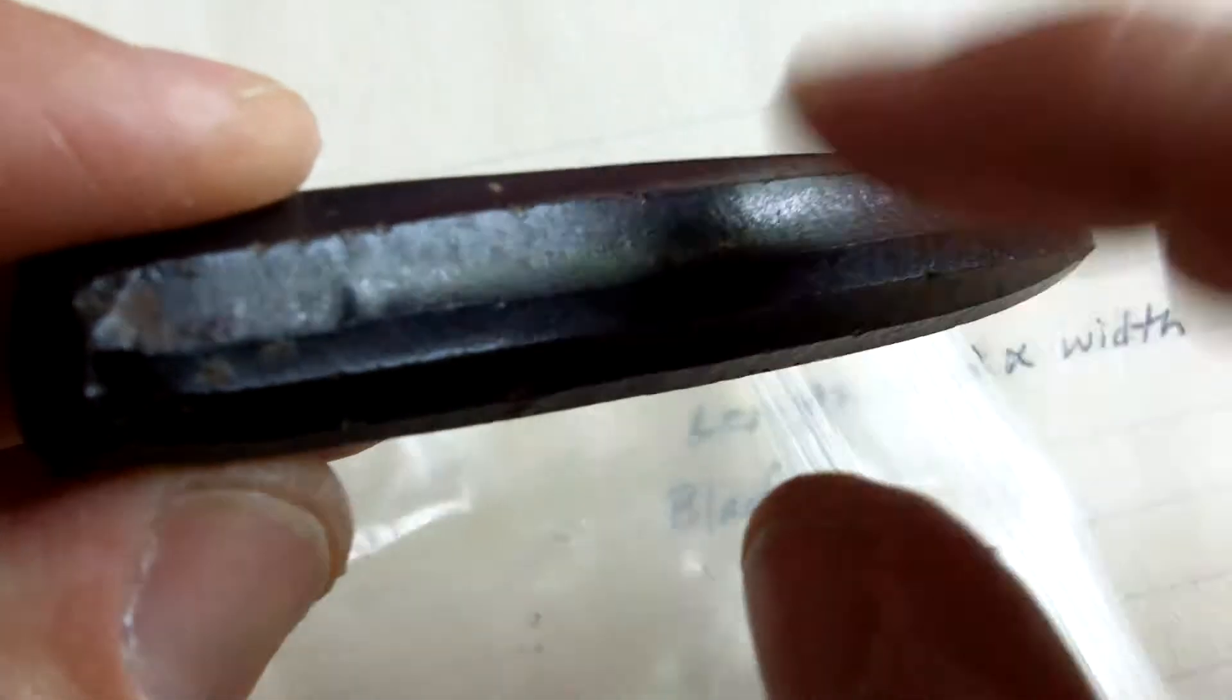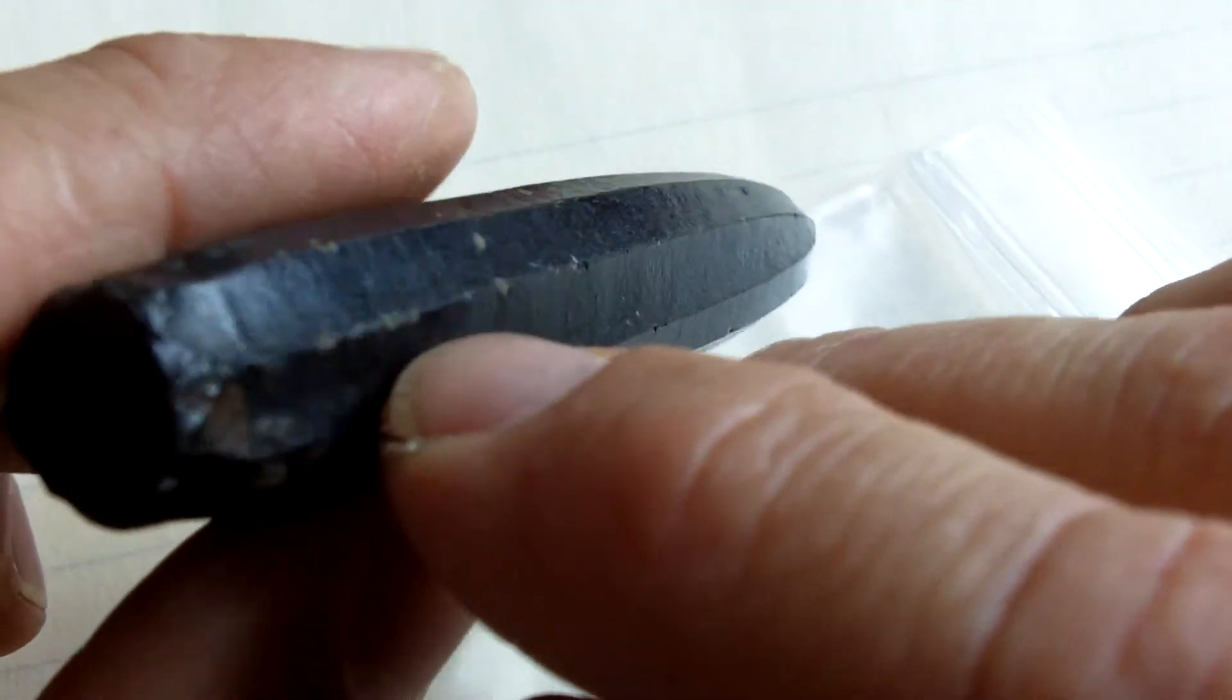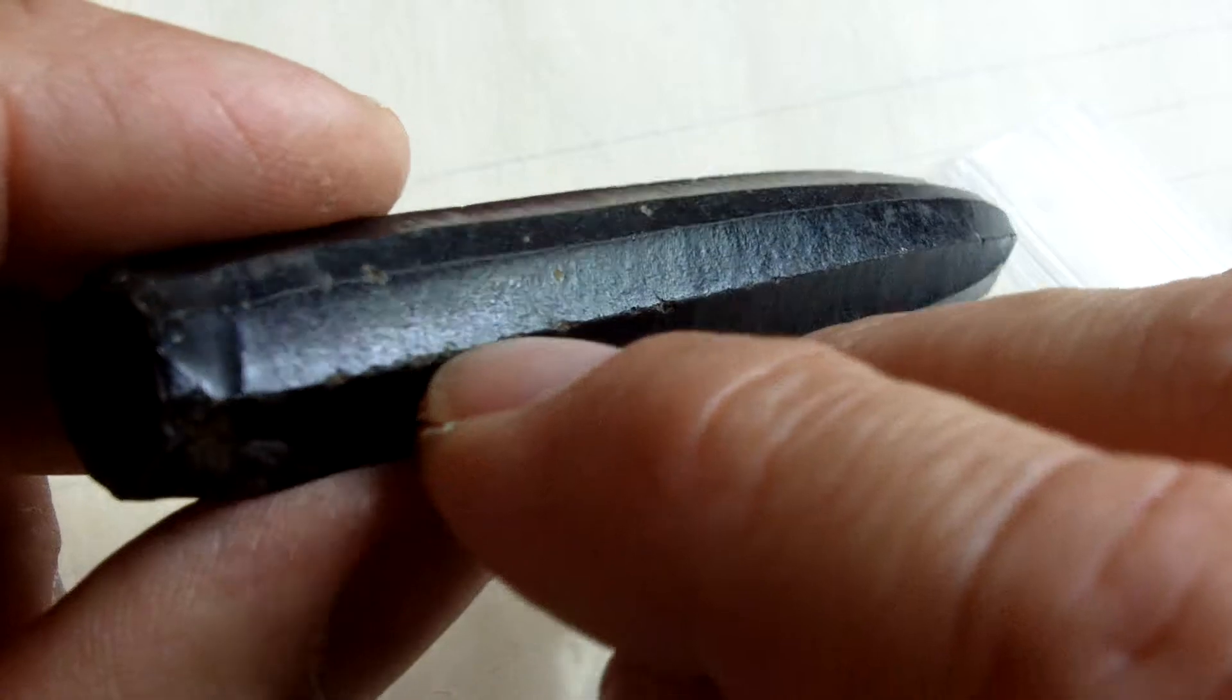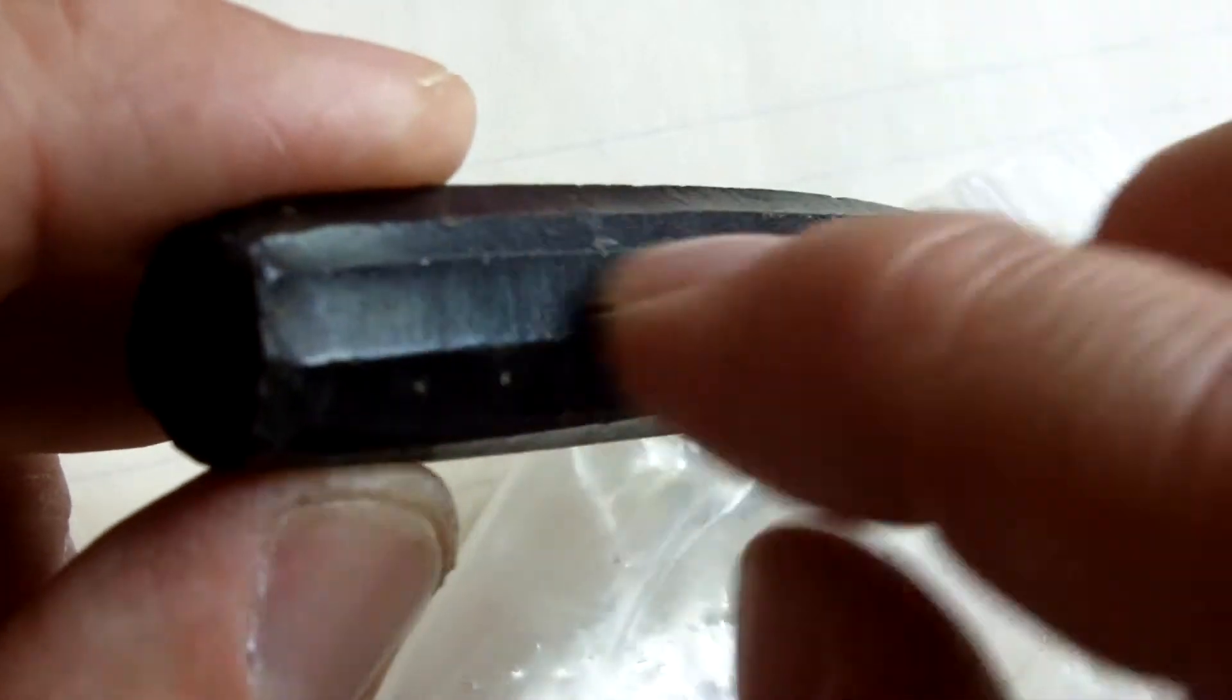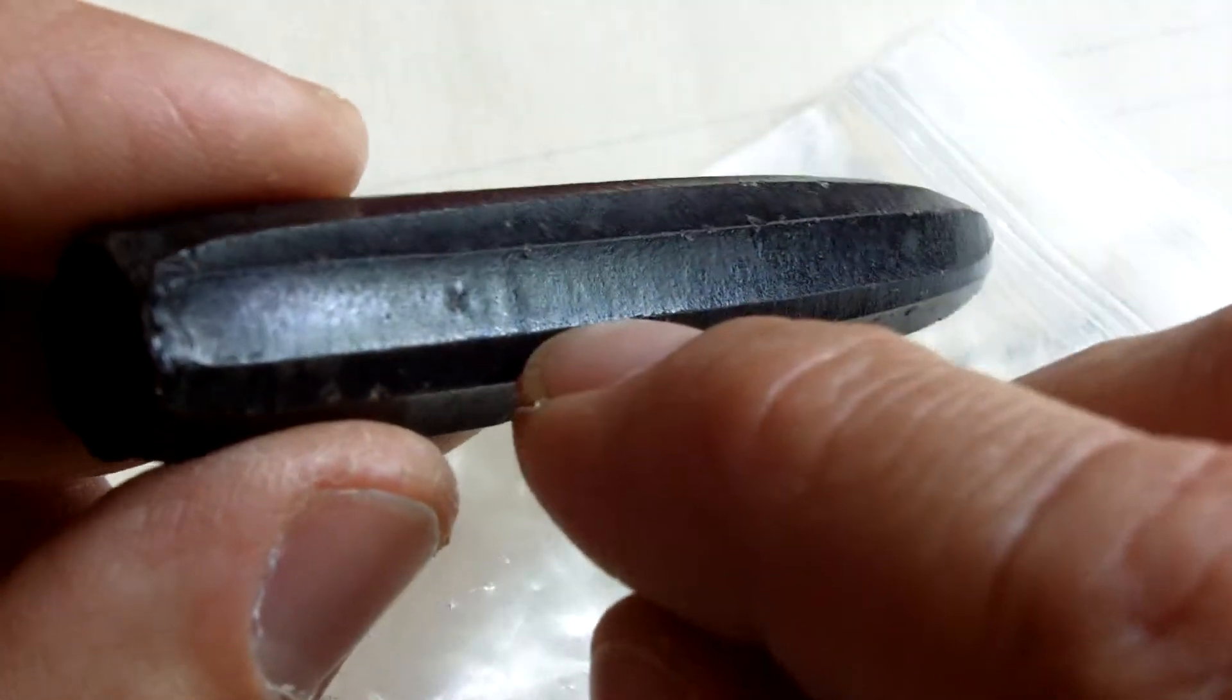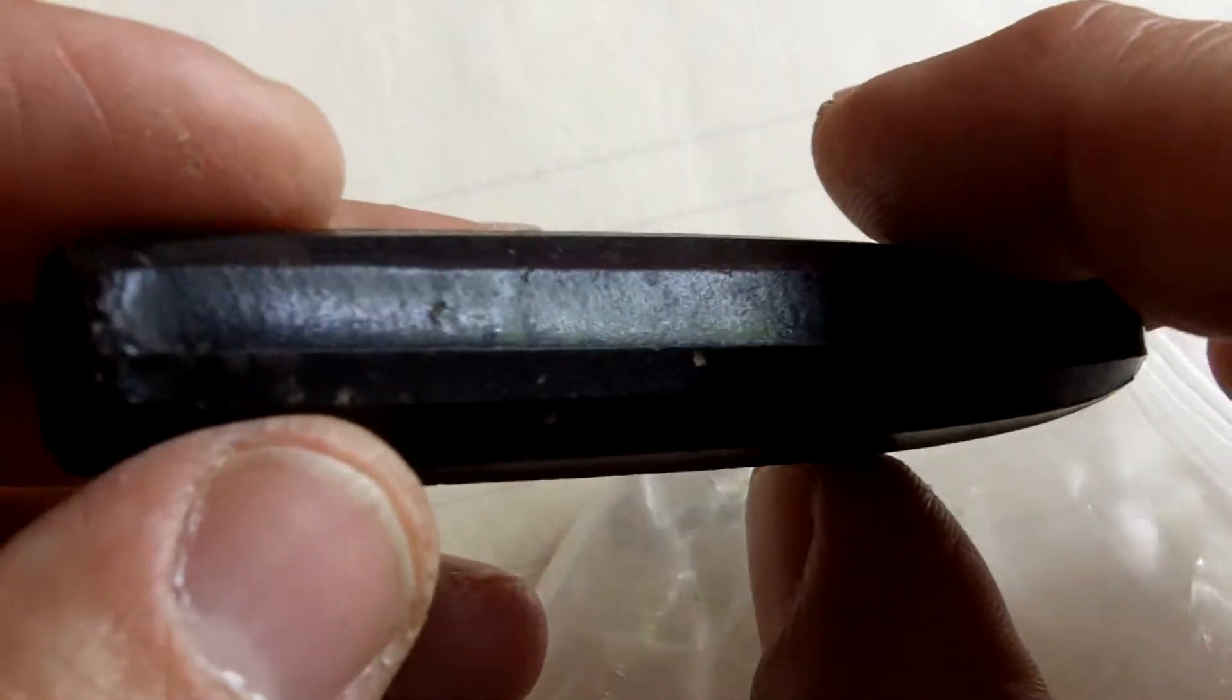The first one I have, this is obsidian, is a blade core made in Central America. They still haven't figured out what technology was used to make this, but I just want to show you the blades removed from here, or the scars of the blades removed. It's really amazing. But this type of technology is used on cores like this. It's not used on bifaces.